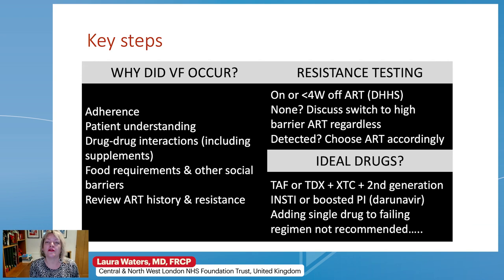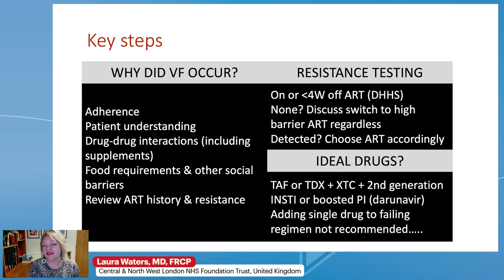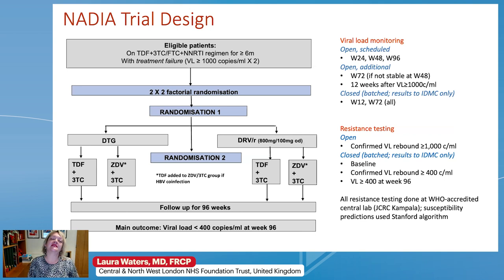Early virologic failure: key things are why did virologic failure occur? A careful review of adherence and patient beliefs and understanding about treatment, drug interactions including supplements, food requirements, other social barriers, and a careful review of history and resistance in case something's been missed. DHHS specifies that resistance testing should be done on the failing regimen or within four weeks of stopping so that you don't risk resistance disappearing back into the background. In the absence of resistance, still consider switching to a higher barrier regimen; if there is resistance, tailor treatment accordingly. In general the guidelines recommend tenofovir, lamivudine or emtricitabine, and a second-generation integrase or boosted PI at virologic failure. DHHS specifies adding a single drug is not recommended.